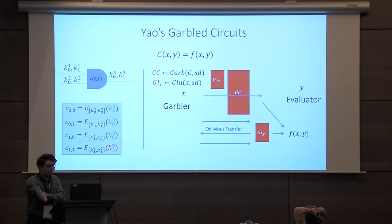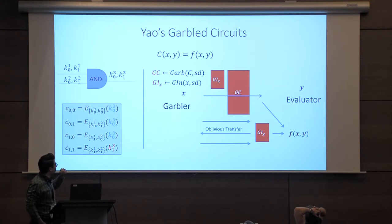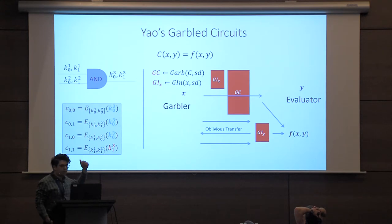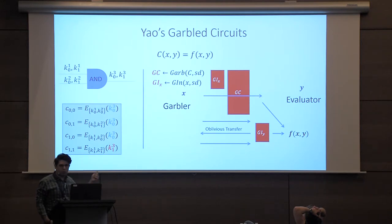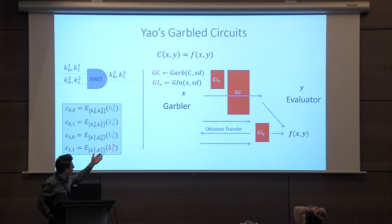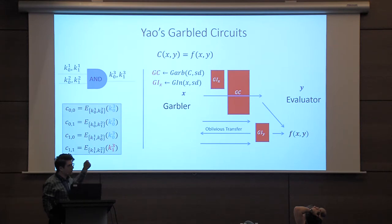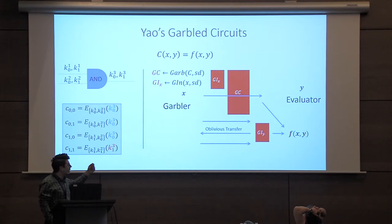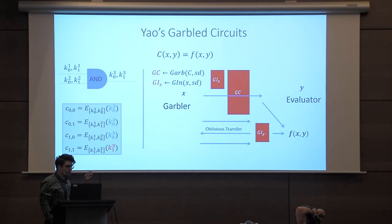All our approaches are going to be based on garbled circuits. Here we have a circuit C representing our function. A garbling algorithm takes a seed and a circuit description and gives us a garbled circuit. We use the same seed to encode garbled inputs. On the right-hand side is the semi-honest two-party garbled circuits protocol, where a garbler sends a garbled circuit and garbled inputs to the evaluator.